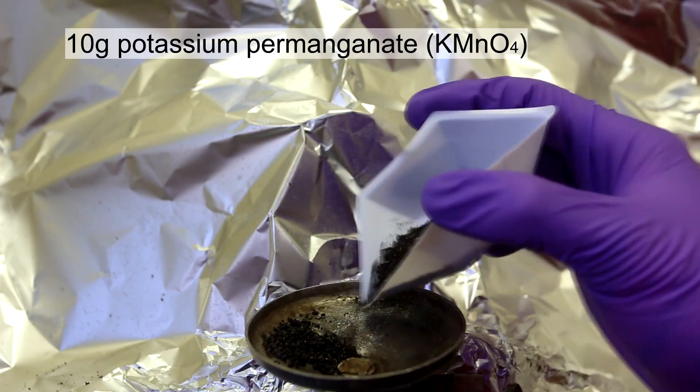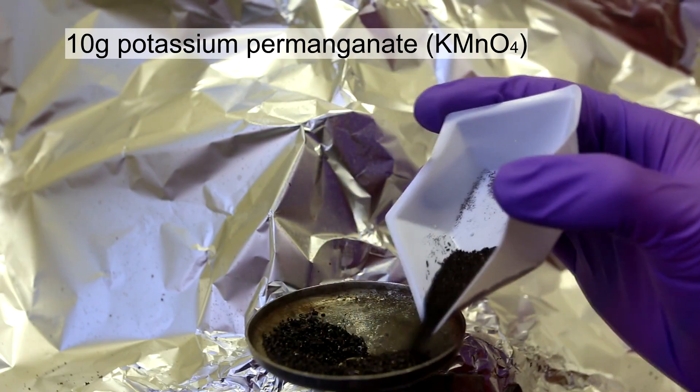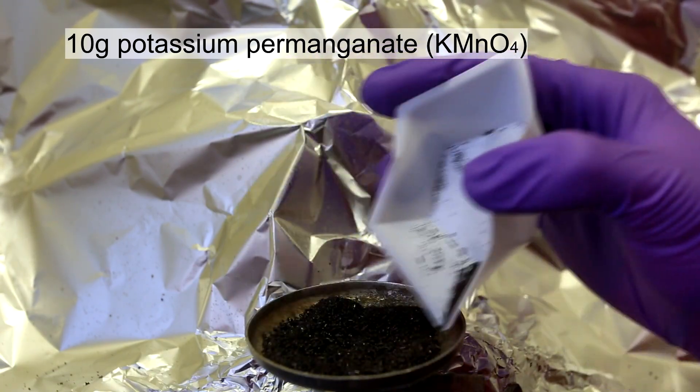First, about 10 grams of potassium permanganate was added to a suitable dish. Crystalline potassium permanganate was used.